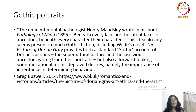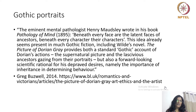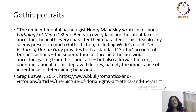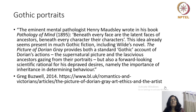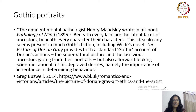The eminent mental pathologist Henry Maudsley wrote in his book Pathology of Mind, published in 1895: 'Beneath every face are the latent faces of ancestors; with every character, their characters.' This idea already seems present in much Gothic fiction, including Wilde's novel. The Picture of Dorian Gray provides both a standard Gothic account of Dorian's actions — the supernatural picture and the faces of ancestors gazing from their portraits — but also a forward-looking scientific rationale for his depraved desires, namely the importance of inheritance in determining behaviour. Thank you for watching. I will continue this discussion in the next lecture.